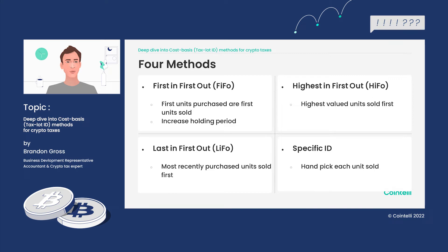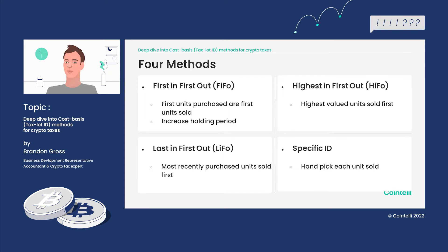The next method is Last In First Out, or LIFO — the complete opposite of FIFO — where your most recently purchased units are sold first. Then there's the HIFO method, Highest In First Out, where the highest valued cryptocurrencies are sold off first. The fourth method is Specific ID, where you actually hand-pick each unit you want to sell. LIFO and HIFO are actually subsets of the Specific ID method, but with Specific ID you need to keep very detailed records of when you purchased each unit and how much it cost.